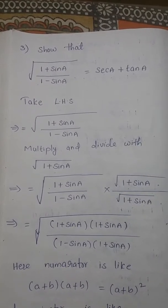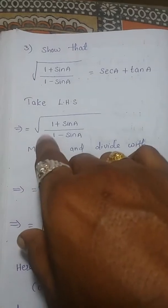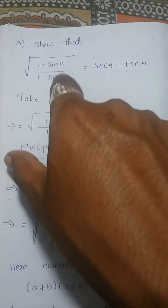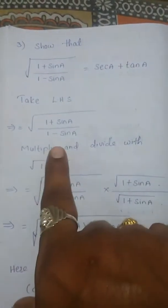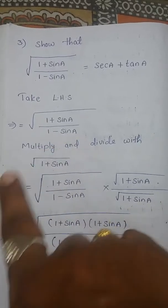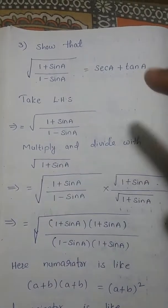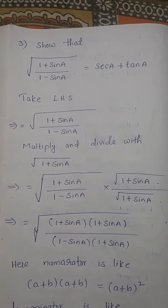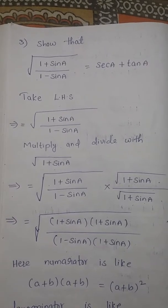First, take the left hand side, that is LHS. LHS is nothing but √((1+sinA)/(1-sinA)). In the next step, multiply and divide with √(1+sinA).